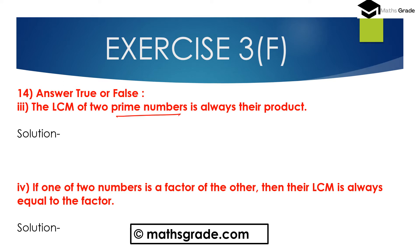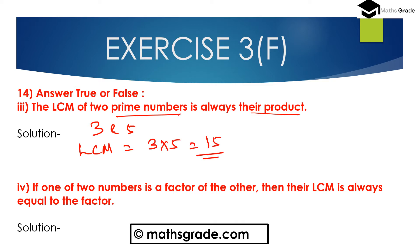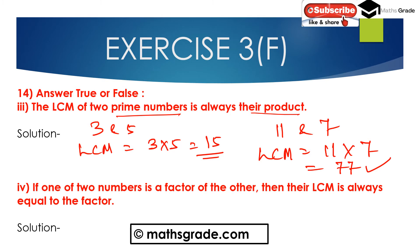Now question number 3: The LCM of 2 prime numbers is always their product. Taking prime numbers 3 and 5, the LCM of 3 and 5 is 3 multiplied with 5, that is 15. Taking numbers 11 and 7, the LCM of 11 and 7 is 11 multiplied with 7, that is 77. So the LCM of 2 prime numbers is always their product. This is true.